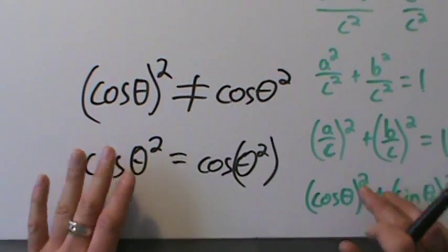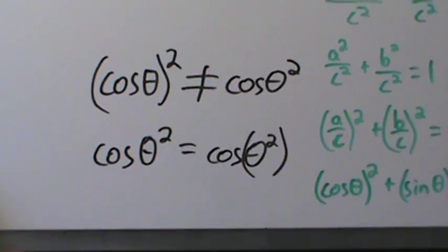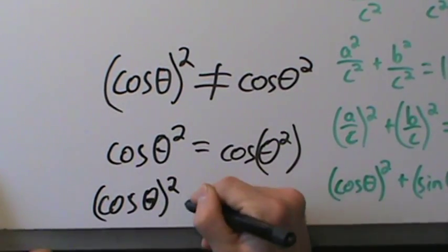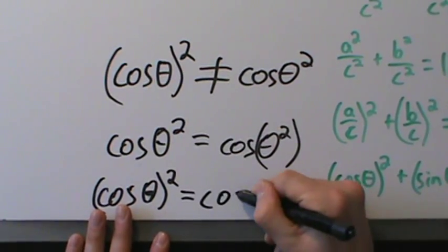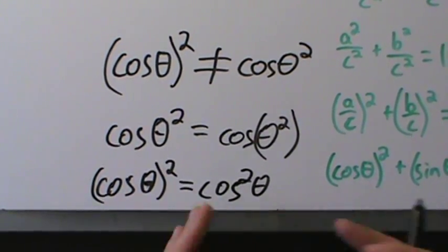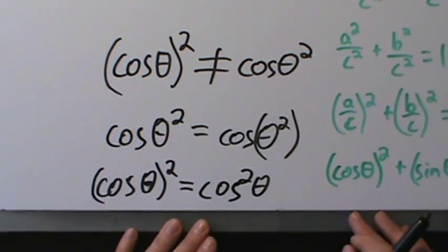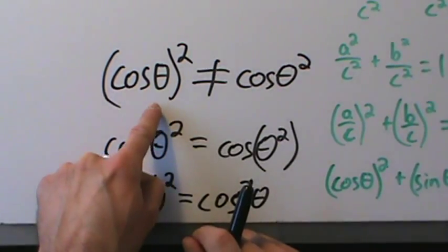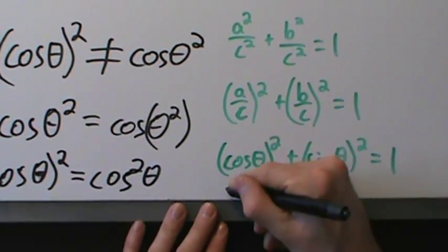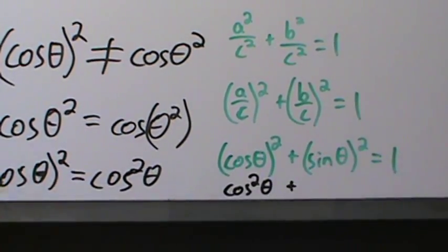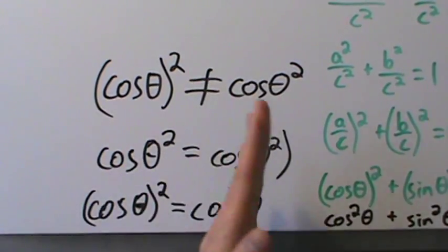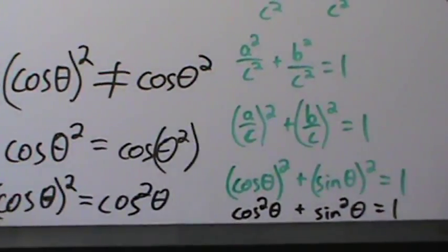Because writing those parentheses all the time is kind of a pain, there's a shorthand notation: (cos θ)² is written as cos²θ — put the square on the cosine. It's a bit of a goofy notation, but it's helpful because it lets us drop the parentheses. So if you're trying to say cosine of theta quantity squared, write it as cos²θ. This shorthand applies to all six trig functions: sine, cosine, secant, tangent, cotangent, cosecant.